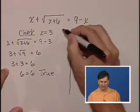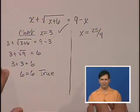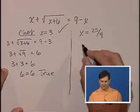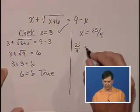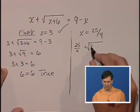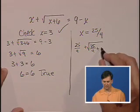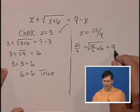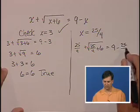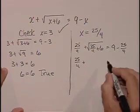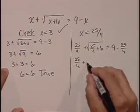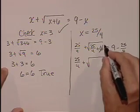So x equals 3 is a solution to this equation. So x equals 25 fourths. 25 fourths plus the square root of 25 fourths plus 6 is equal to 9 minus 25 fourths. Here, we have 25 fourths plus the square root of 6 will be the same thing as 24 over 4.